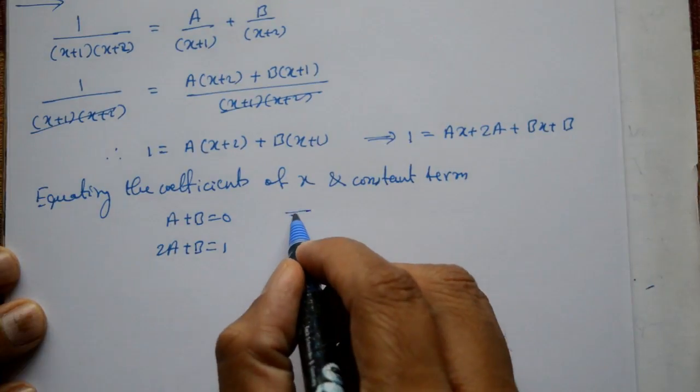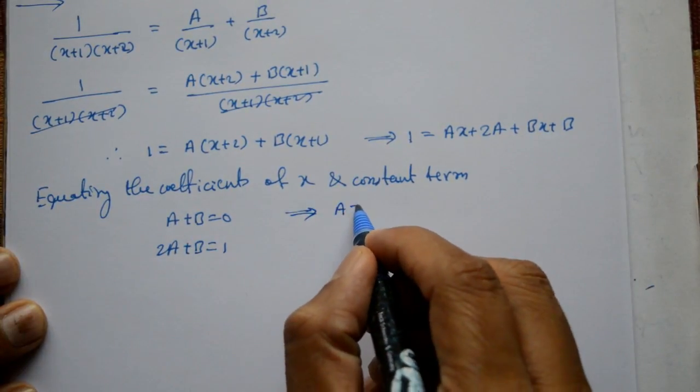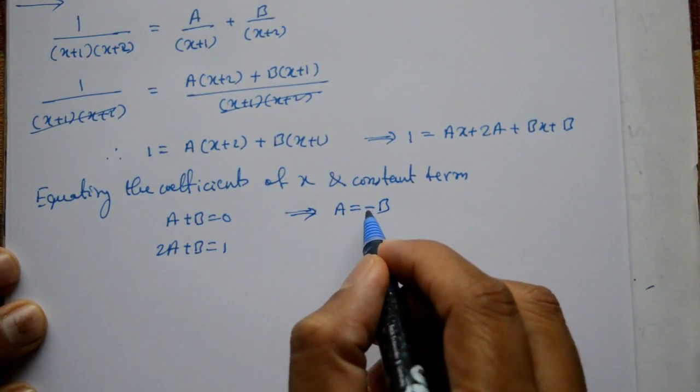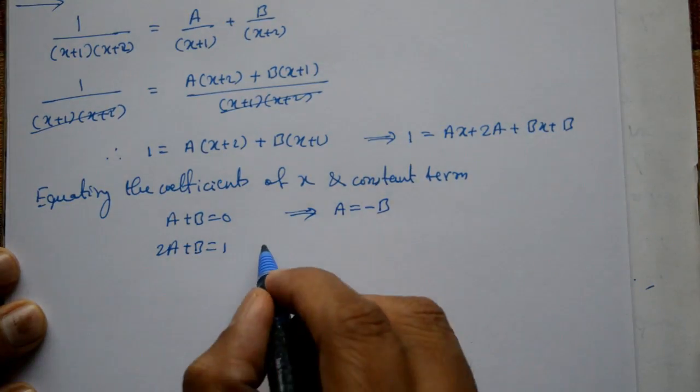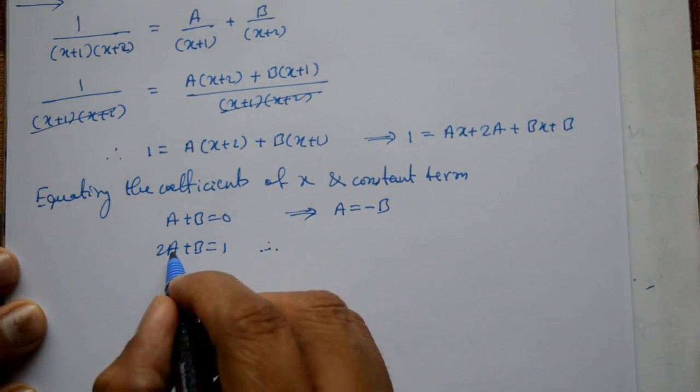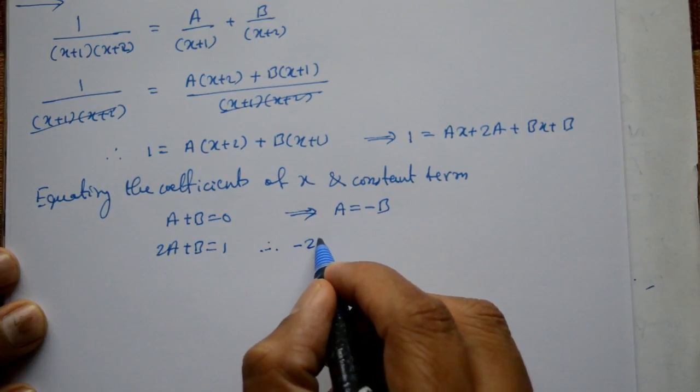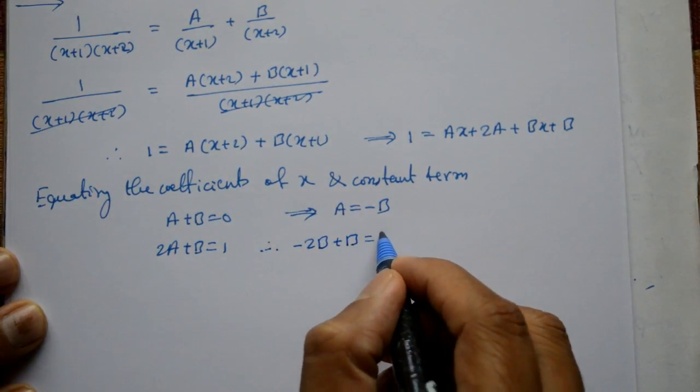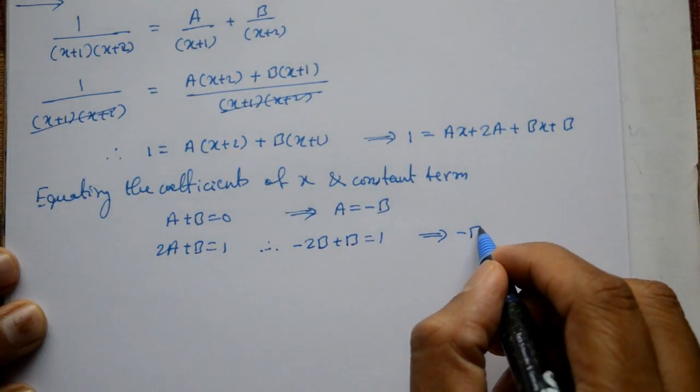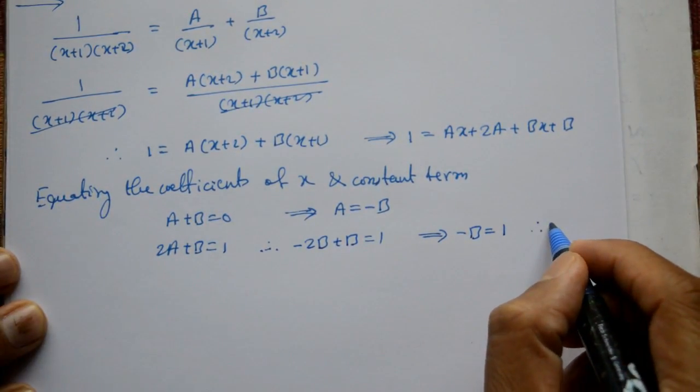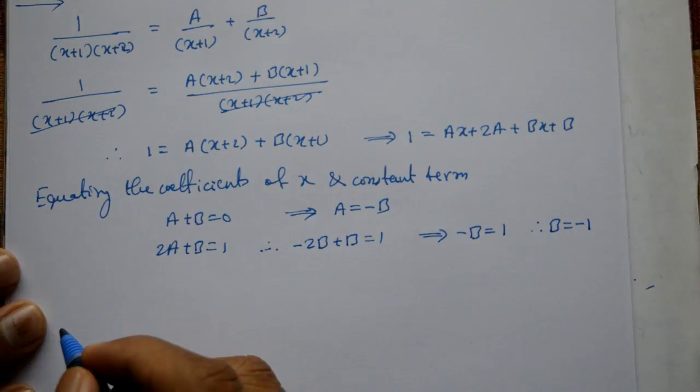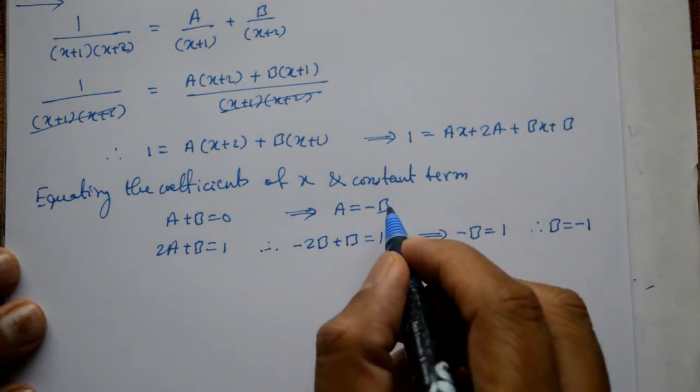That is equal to, either kya hoga, A is equal to minus B ho ga, ish A ko either substitute karna hai. Therefore, A is equal to kya hai minus B hai, so either minus 2B plus B that equal to 1. Or minus B is equal to 1, therefore B value kya hai minus 1 ah gaya, B is equal to minus 1 ah gaya.